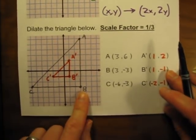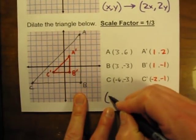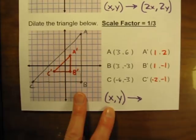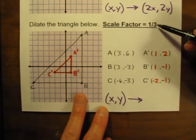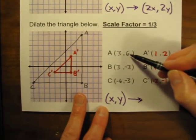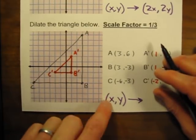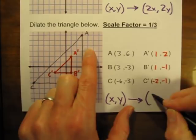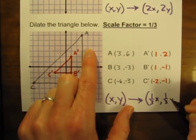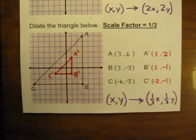For a dilation with a scale factor of 1 third, we start with any point x, y. I took the scale factor of 1 third and multiplied it by both coordinates. So any point x, y becomes one-third x, one-third y. That is the coordinate rule. That's everything you'll need to know about dilations, at least in 8th grade math.